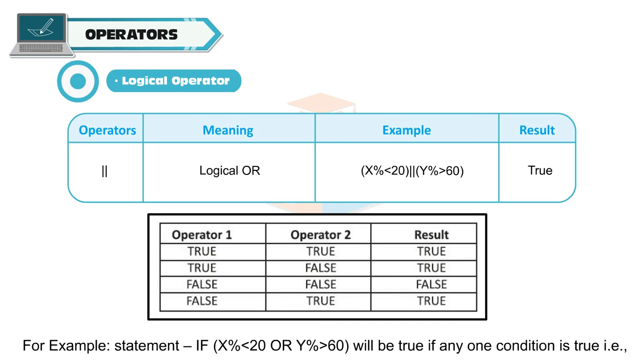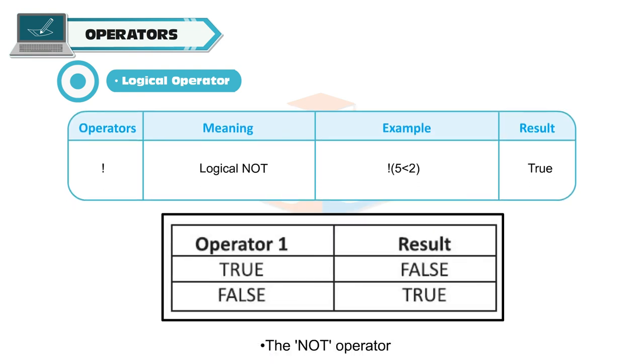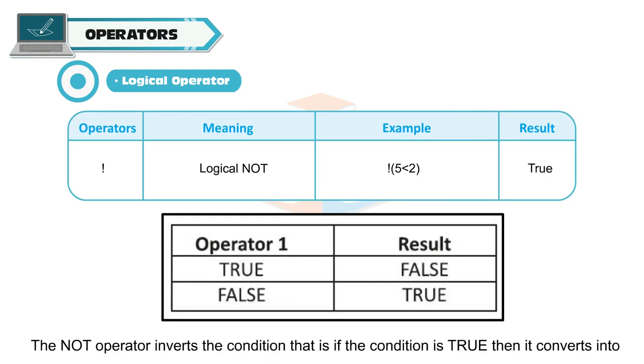The OR Operator: The conditions with OR Operator will be true when either one condition is true or both the conditions are true. For example, Statement If x percent is less than 20 or y percent is greater than 60 will be true if any one condition is true. That is, Either x is less than 20 or y is greater than 60.